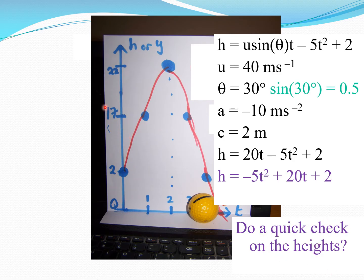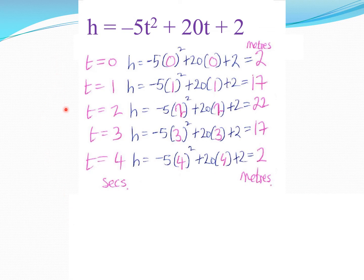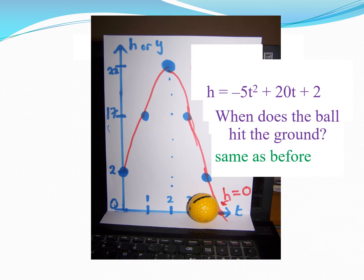Let's verify the heights. For t = 4: h = −5(16) + 20(4) + 2 = −80 + 80 + 2 = 2 meters. That matches. There's the parabola shape drawn, and the ball is back on the ground at some time after t = 4 seconds. When does the ball hit the ground? We set h = 0 and solve using the quadratic formula.